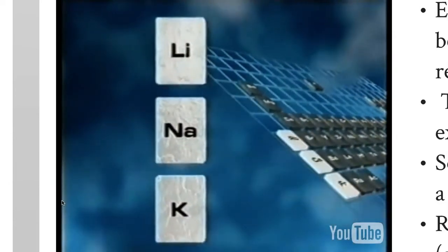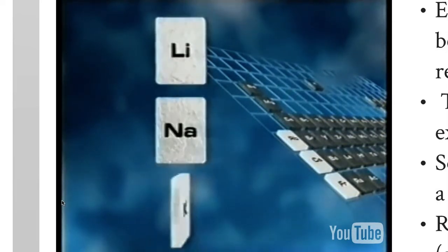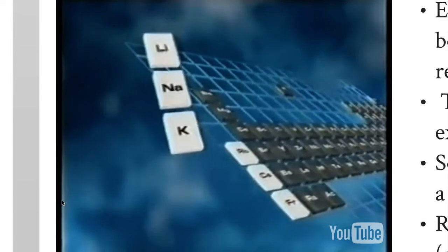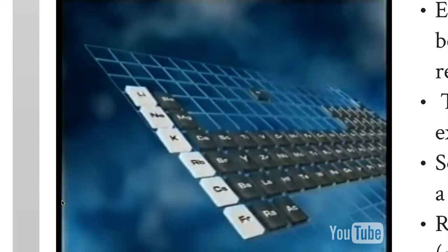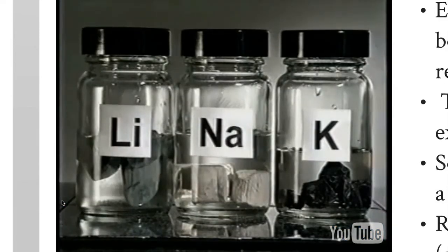Group 1 of the periodic table is a group of reactive metals. Lithium, sodium and potassium are at the top. These metals are so reactive they have to be stored under oil and need to be handled with care.